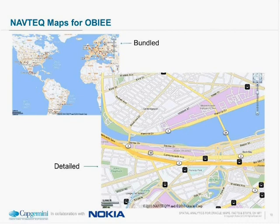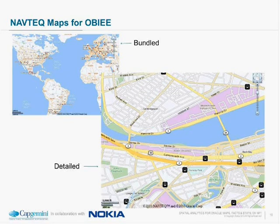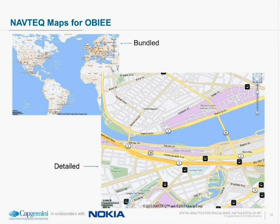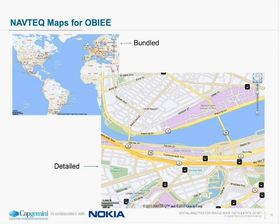Nokia has enabled and licensed Oracle to bundle our data sets with OBIEE. The intent was to get customers and users familiar with geographic data sets on a global and local basis. What you've been seeing when you open OBIEE is the bundled data that comes with the product itself. In the lower right corner is our detailed data set available on a license fee basis. Some people have a misconception that they get all this data bundled — yes, there is a lot of data in the bundle, but when you get down to the detail, that comes back to us for licensing purposes.